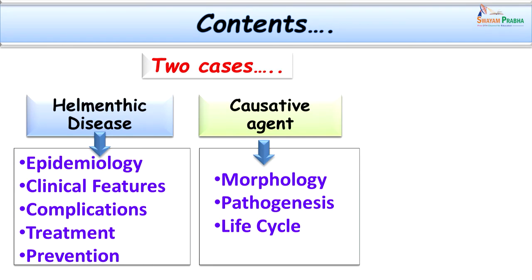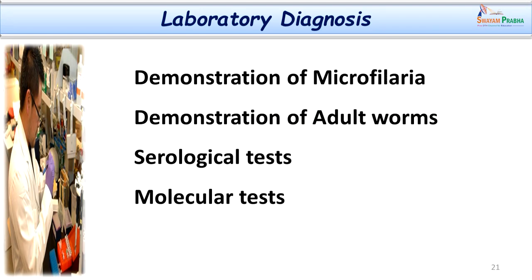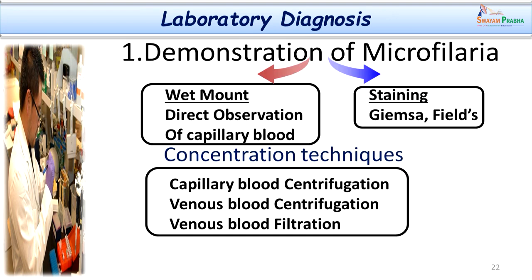We have covered details of the disease and the causative agent — particularly Wuchereria bancrofti — including morphological forms, life cycle, and pathogenesis. Now let us consider the detailed laboratory workup in such cases. We will consider it under microscopic, culture, and serological techniques. We can demonstrate microfilaria in the peripheral blood, demonstrate adult worms in lymphatics and tissues, and go for serological tests demonstrating antigens or antibodies, as well as molecular tests.